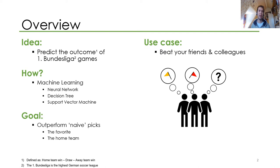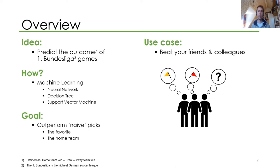Let's start with an overview. I tried to predict the outcome of Bundesliga games — outcome defined as home team win, draw, or away team win. I implemented three machine learning algorithms: a feedforward neural network, a decision tree, and a support vector machine model. The goal is to outperform the naive picks, that is, always picking the favorite or always picking the home team.